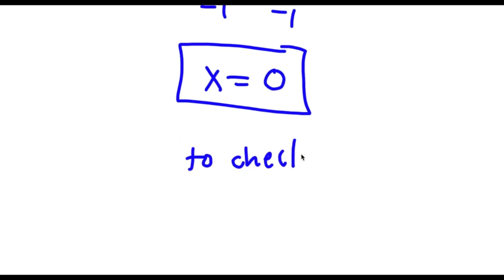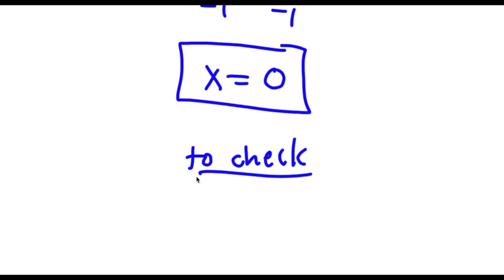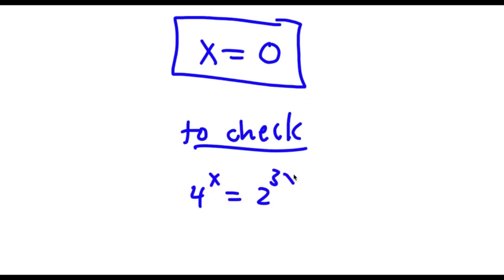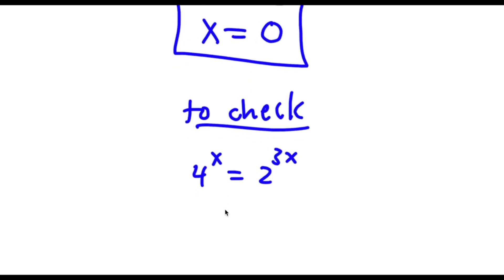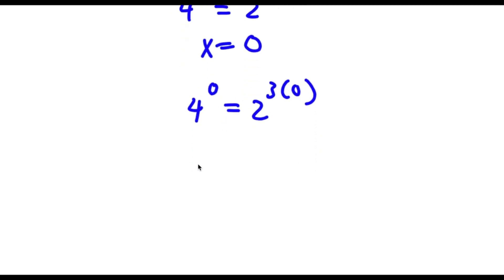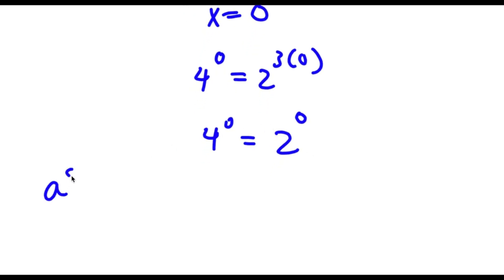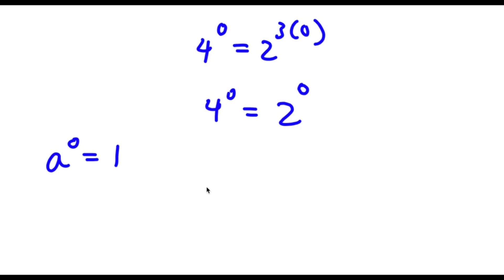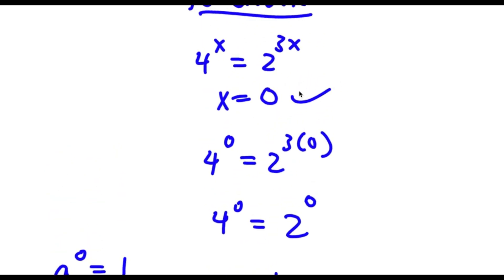Now to check: my original equation was 4 to the power of x is equal to 2 to the power of 3x. I know that x is equal to 0, so now I have 4 to the power of 0 is equal to 2 to the power of 3 times 0. 3 times 0 is 0, so now I have 4 to the power of 0 is equal to 2 to the power of 0. Any number to the power of 0 is simply equal to 1. So 4 to the power of 0 equals 1 and 2 to the power of 0 is also equal to 1. So I have 1 is equal to 1, and because this is right my solution is right as well.